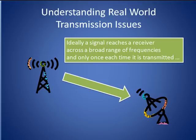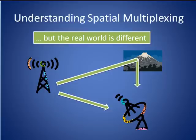To understand MIMO, let's first consider an ideal world situation in which a transmitter is sending a signal to a distant receiver. In this perfect environment, the receiver interprets all frequencies equally well and receives signals only once each time they are transmitted. Unfortunately, in the real world, the situation is often far more complicated.